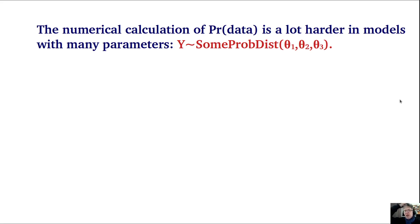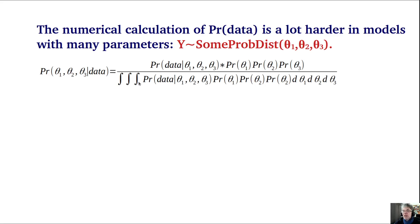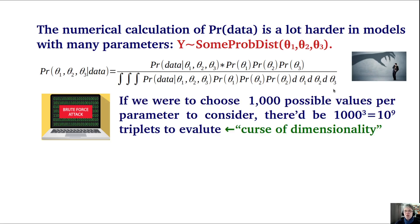This numerical calculation of the probability of data is much harder for models with many parameters. For a model with three parameters theta1, theta2, and theta3, if we choose 1,000 possible values per parameter, there would be 1,000 cubed — that is 10 to the 9 — triplets to evaluate. This is known as the curse of dimensionality: the number of combinations increases fast as the model has more parameters.